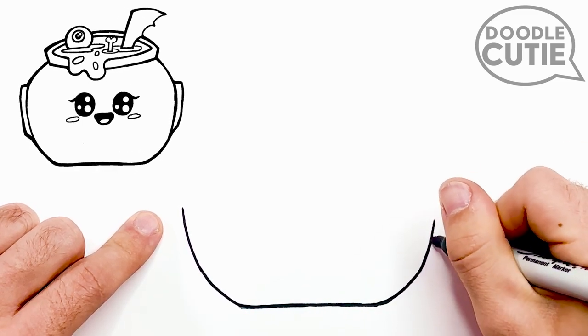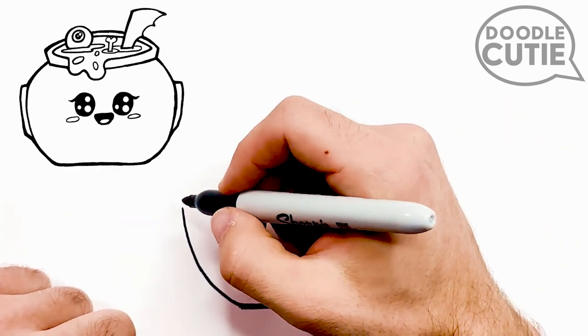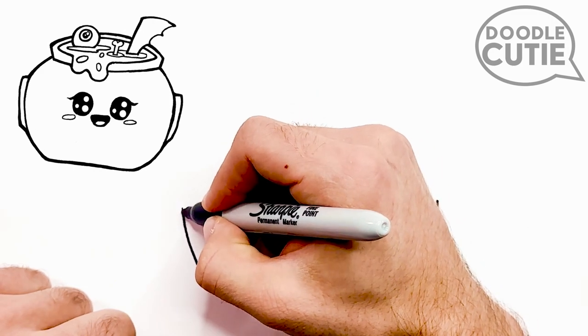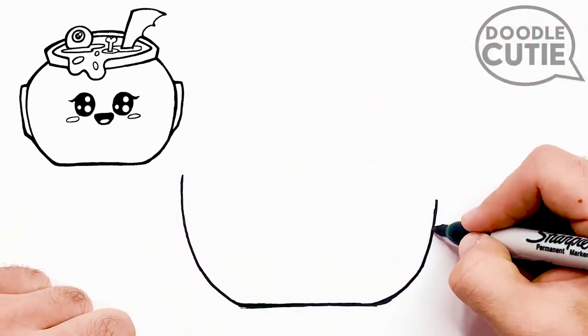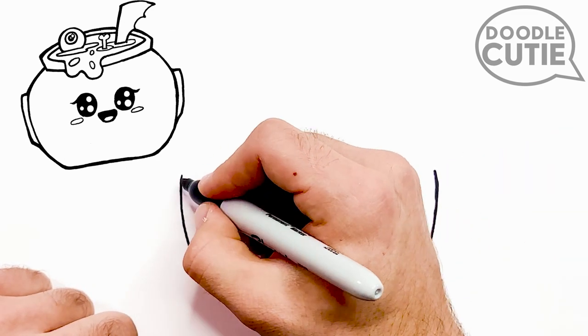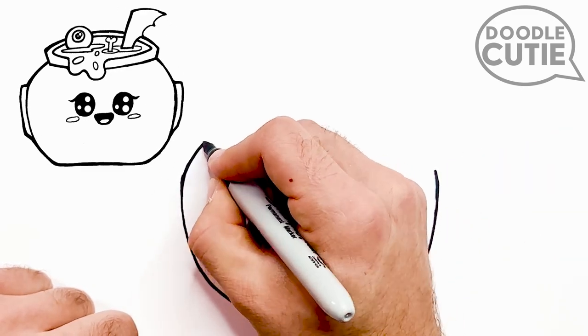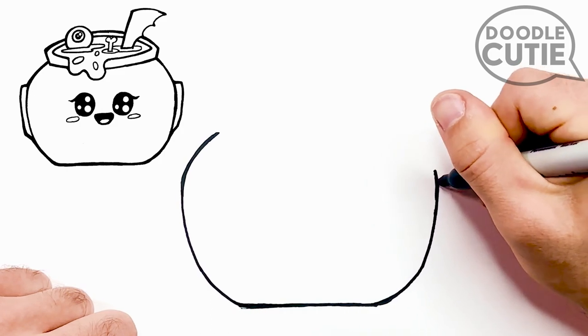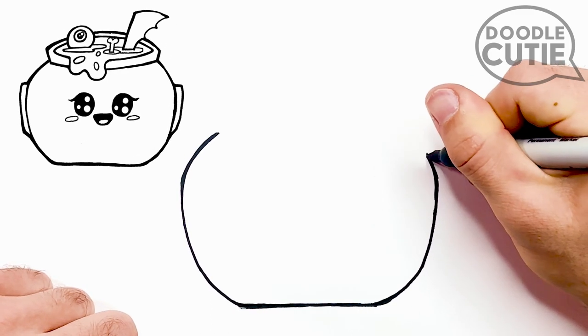Next, we'll go to our left curve and continue that line straight. And then another straight line on the right towards the top. And then to finish the sides of our cauldron, we'll draw two more curves on the left and right top sides.